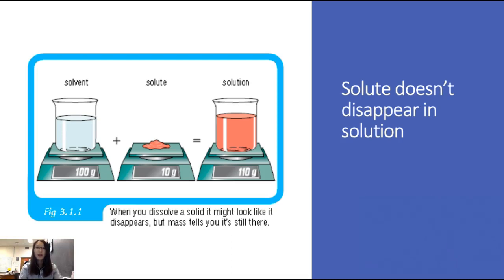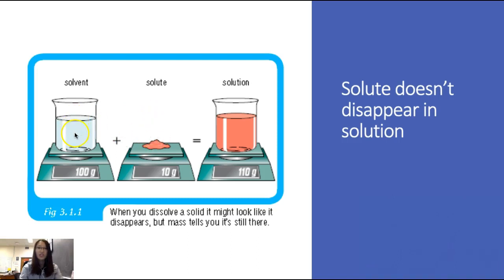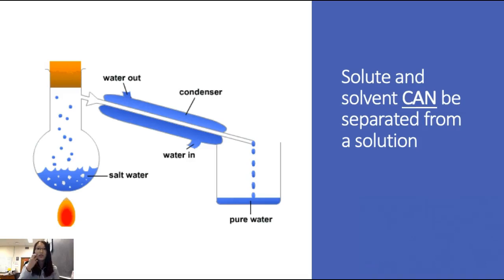First off, in order to talk about transport you have to understand that a solution is made out of a solute and a solvent, and the solute doesn't actually disappear in the solution. As you can see in this picture, when you add the solute to the solvent the overall weight of the solution is the weight of both, even if you can't see the solvent and the solute separately. You should also know that the solute and the solvent can be separated.